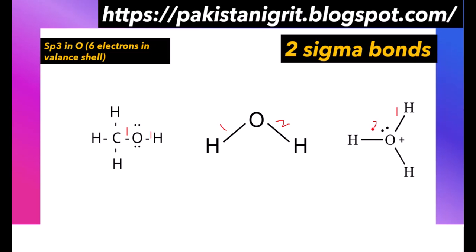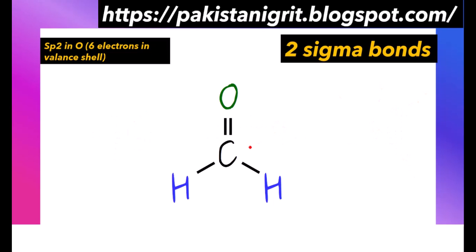In the hydronium ion, we can observe that oxygen is forming two sigma bonds and one bond is formed by donation of a lone pair. Oxygen has two lone pairs, and here oxygen is donating one of them to hydrogen. So the oxygen is originally forming two sigma bonds, which means oxygen having two sigma bonds — one sigma bond less than nitrogen — is sp3 hybridization.